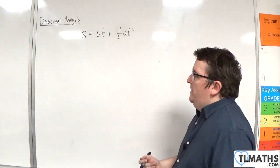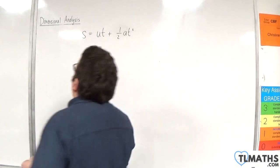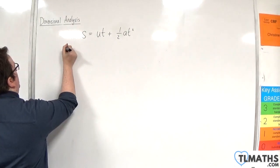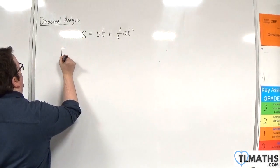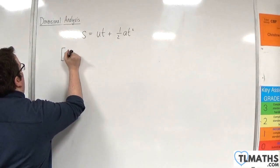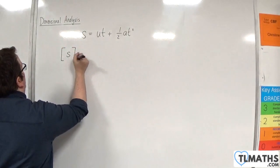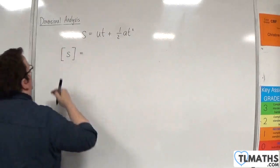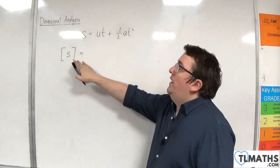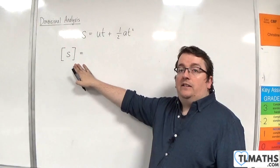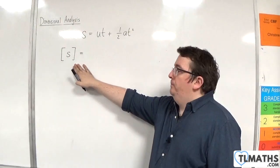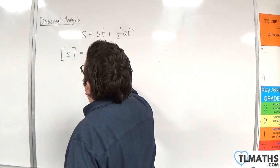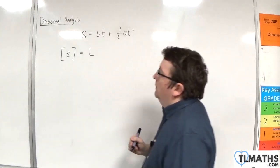The way that we do that is we look at the left-hand side of the formula, and I look at the dimensions of S. Now, the dimensions of S — that is a displacement — and so the dimensions would just be L.